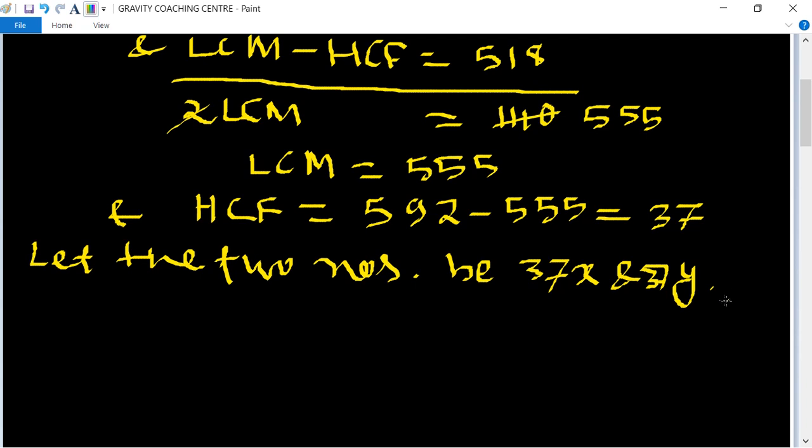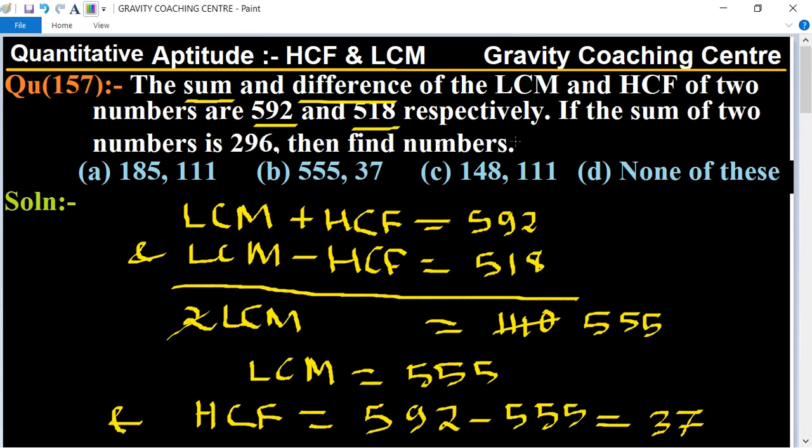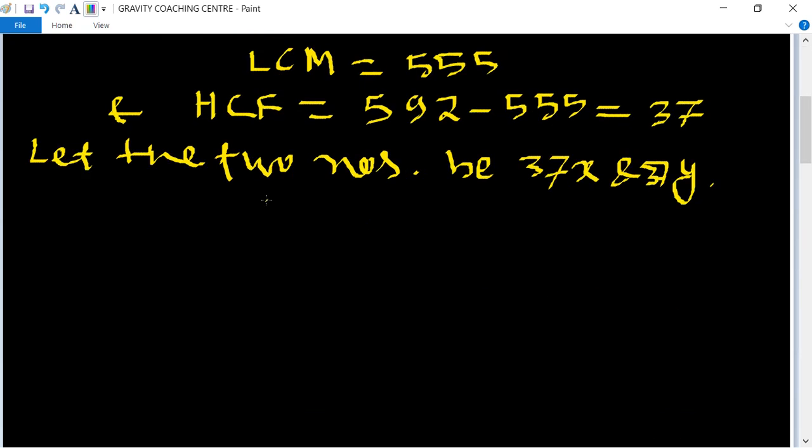Because HCF is included in both the numbers. And according to the question, the sum of two numbers is 296, means 37x plus 37y equal to 296.